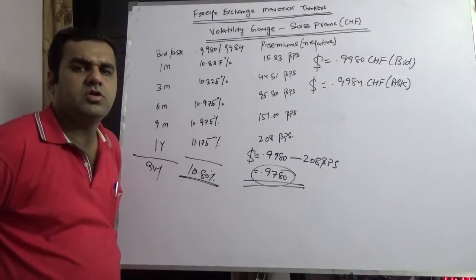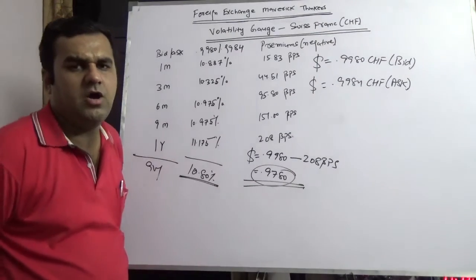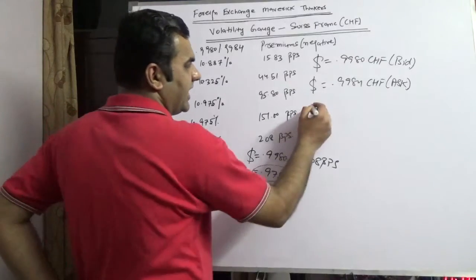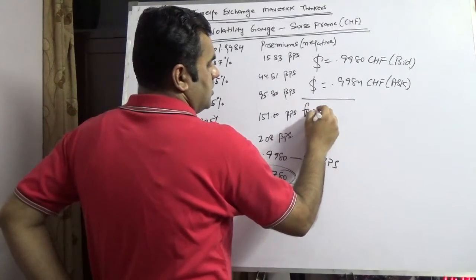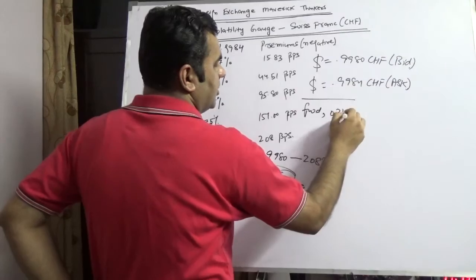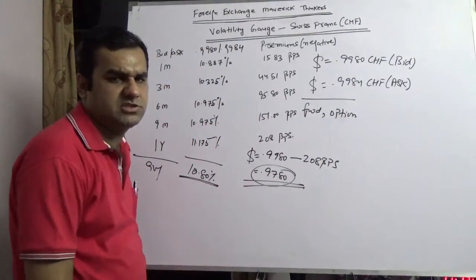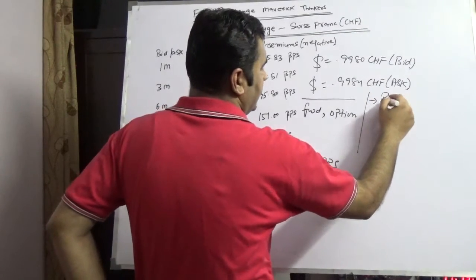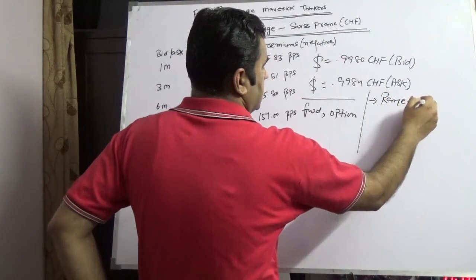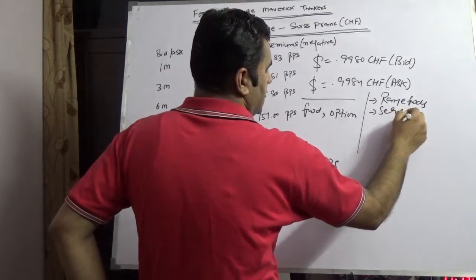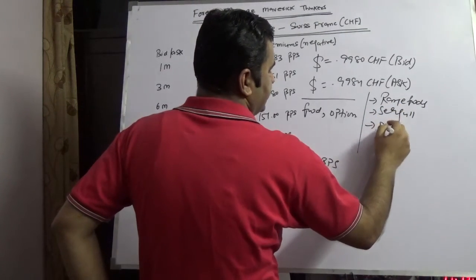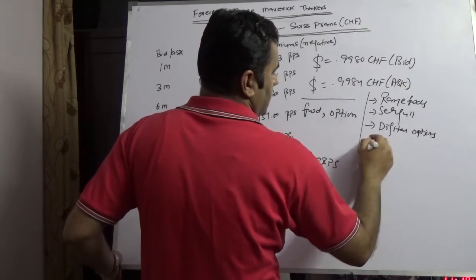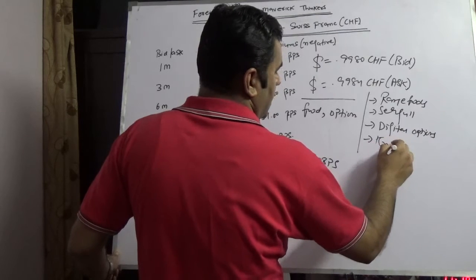Now the treasurer has to think which way he wants to go. Would he like to book a forward contract, would he like to book an option contract, or would he like to book cost reduction structures? There are various cost reduction structures like range forwards, like seagull, like digital spreads, digital option, like knock-in knock-out, and a lot of this.